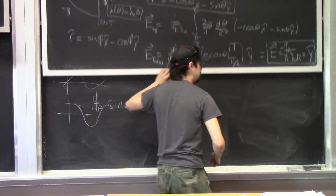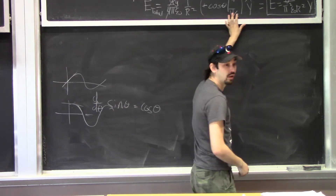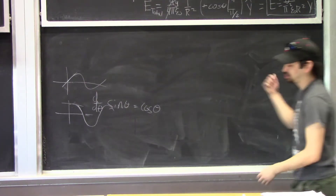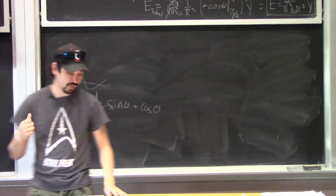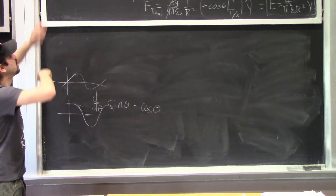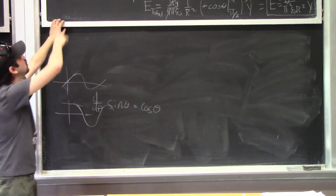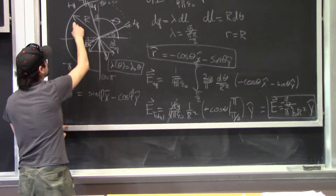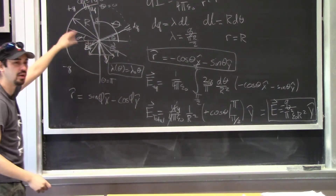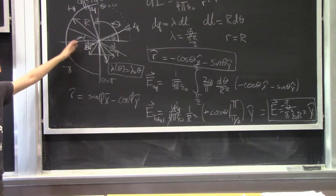Student question: is it still correct to define R-hat from this side and use the angle from the negative axis? Yes, as long as it's consistent and you have some idea of what the answer should be. There are many different ways to define the angle — phi, alpha, etc. — and that just changes what your limits of integration are.